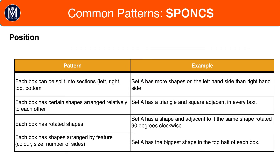Position patterns are to do with the actual arrangement and position of the shapes in the test boxes. There are many different variations. For example, we could look at how shapes are arranged relative to each other — in Set A there could be a triangle and square next to each other, whereas in Set B there could be a triangle above a circle. Alternatively, there could be patterns to do with rotations, or shapes arranged by feature — for example, the biggest shape could always be on the top half of a box in Set A, whereas in the bottom half in Set B.